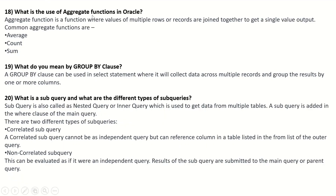What is the use of aggregate functions in Oracle? Aggregate functions join the values of multiple rows or records together to get a single value output. Common aggregate functions are AVG, COUNT, and SUM. What do you mean by GROUP BY clause? A GROUP BY clause can be used in a SELECT statement where it collects data across multiple records and groups the results by one or more columns.